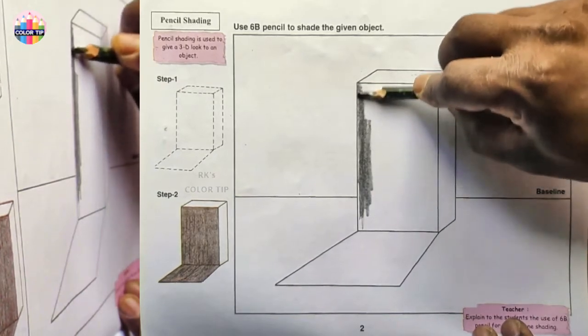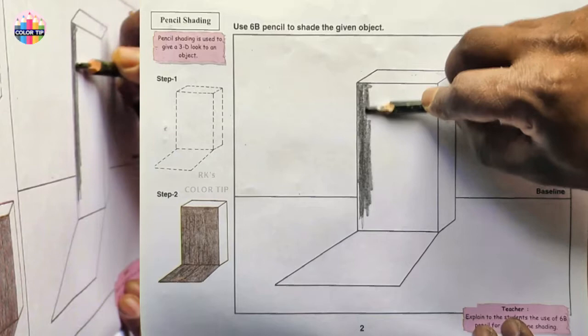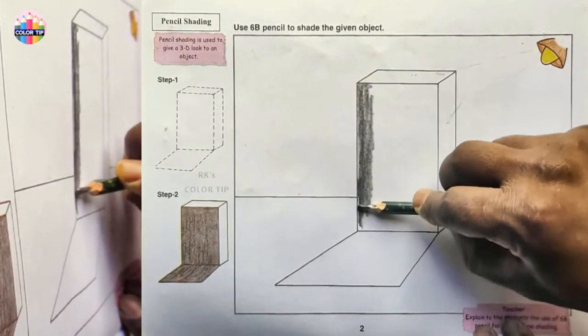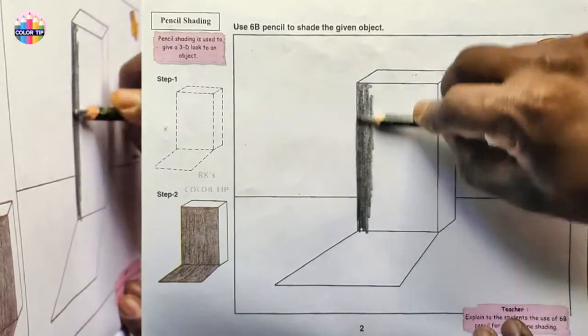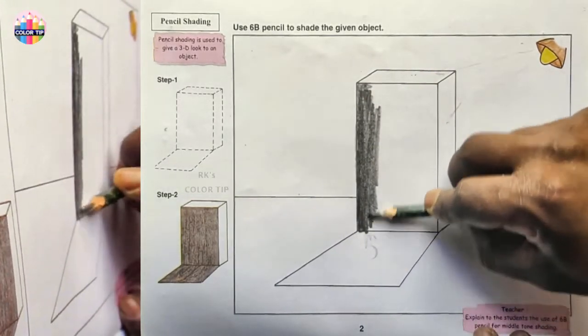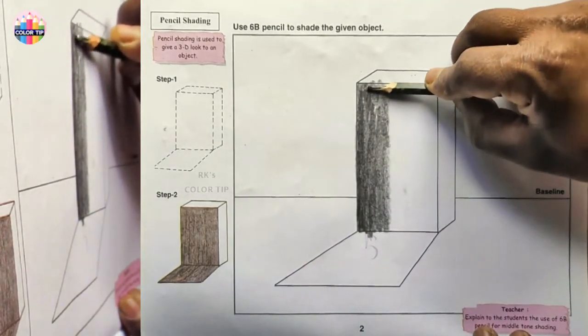Carefully shade near the lines here, I mean at this line. Even if you cross these lines, you can erase it afterwards, so you don't need to worry about this. Carefully shade at the top edge.